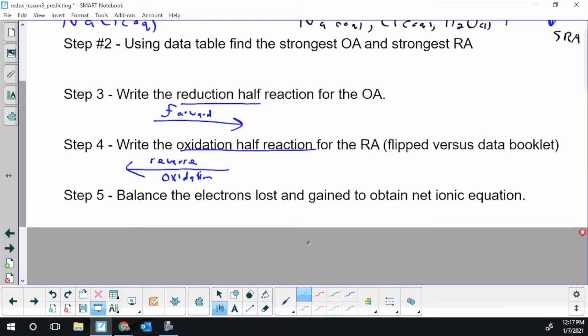Now, you saw me do this yesterday in the first lesson where I netted up two half reactions. I made sure the electrons balanced. I had to scale them, kind of like we did in Hess's law, by doubling or tripling one of the reactions.